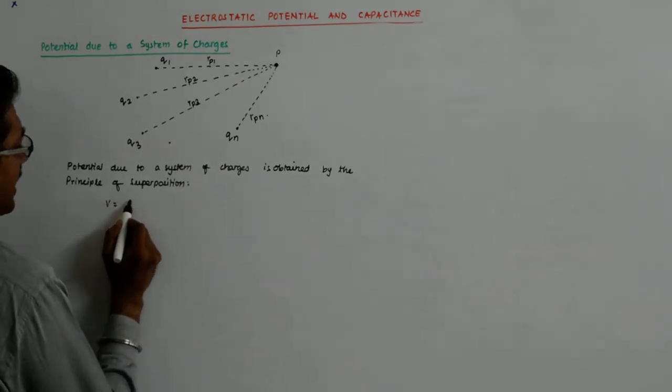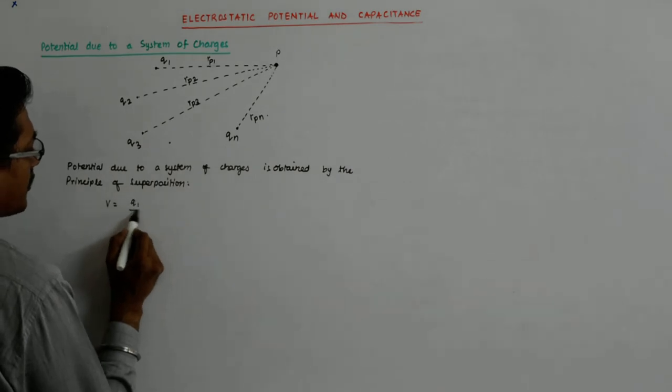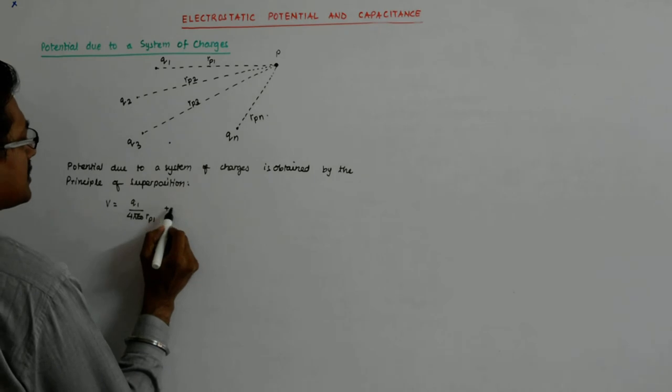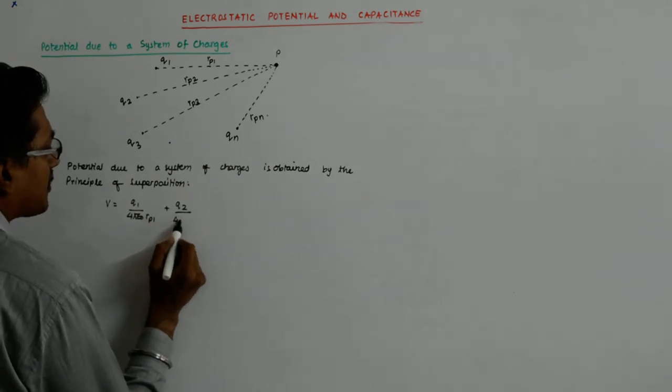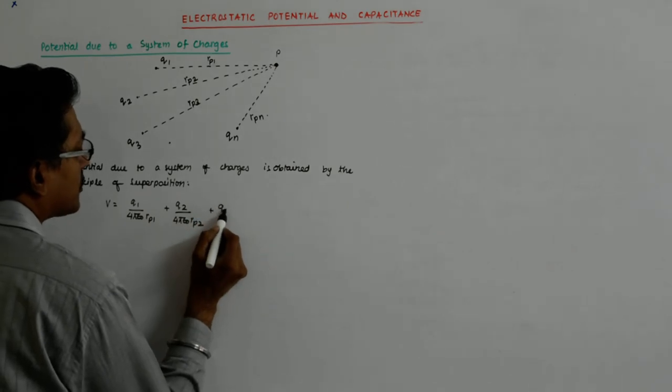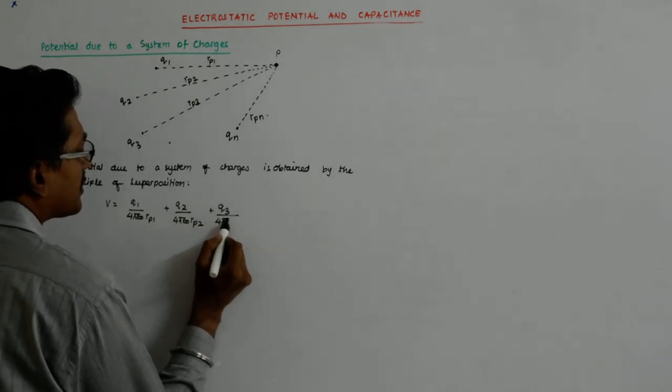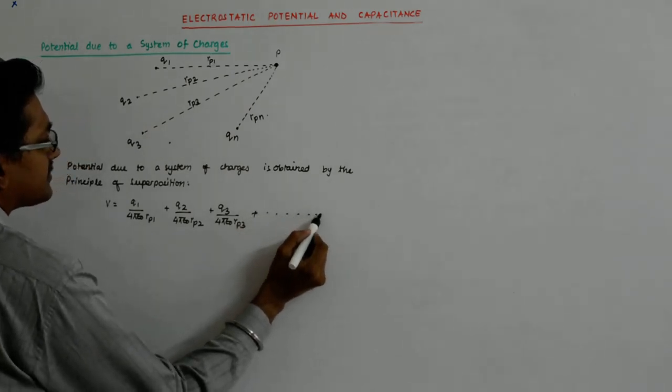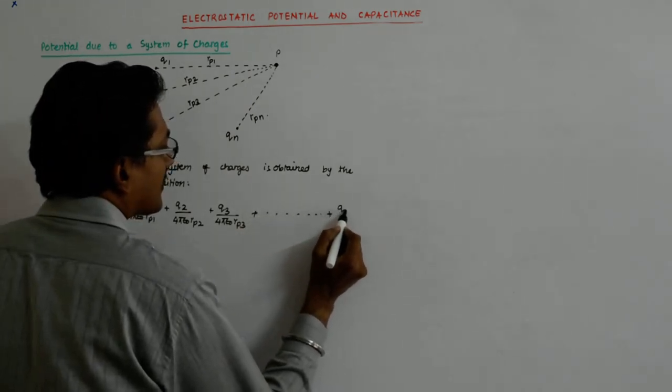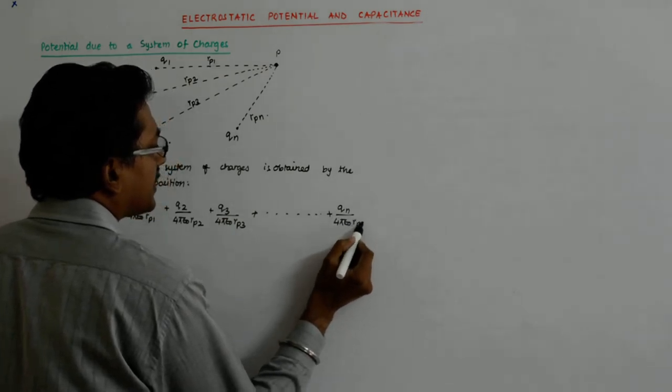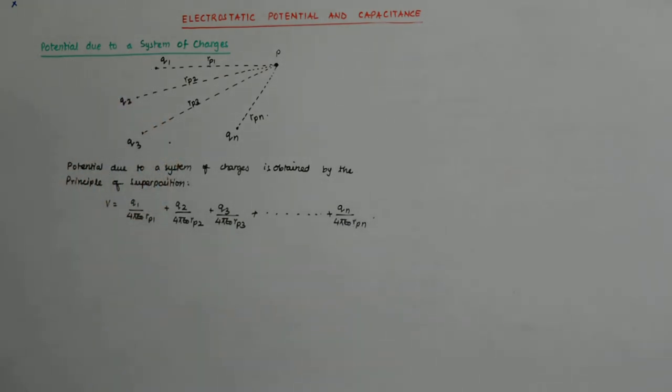This is equal to q1 upon 4πε₀Rp1 plus q2 upon 4πε₀Rp2 plus q3 upon 4πε₀Rp3 plus... plus qn upon 4πε₀Rpn.